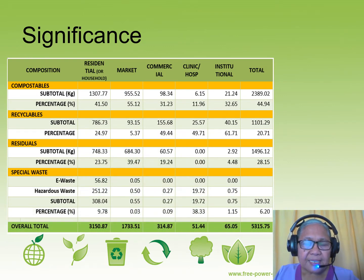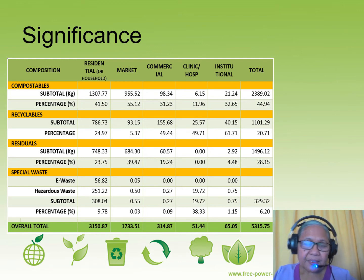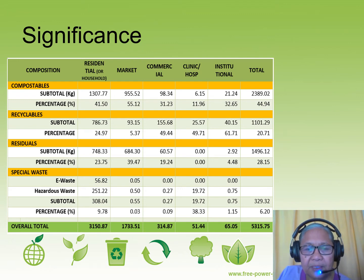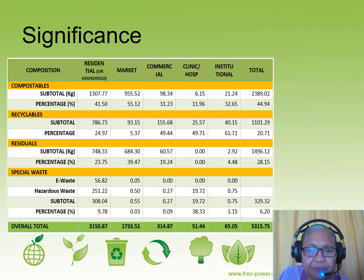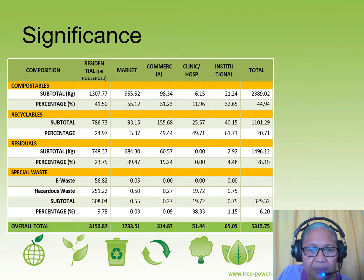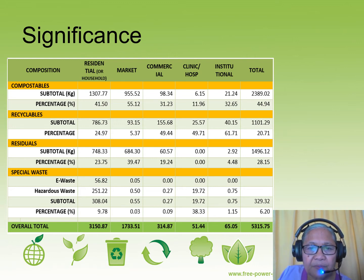From the overall total, you will see in the table that the residential or household source contributes the greatest amount of the overall waste generated. This was taken from another survey conducted in Katarman, probably in 2015. So, the overall total is 5,315.75 kilograms — remember, this is on a per day basis. The most waste comes from households, followed by waste from the market, then from commercial establishments, institutional sources, and lastly from clinics and hospitals.